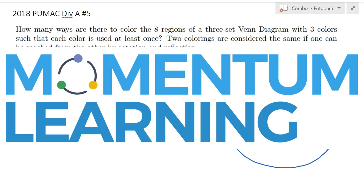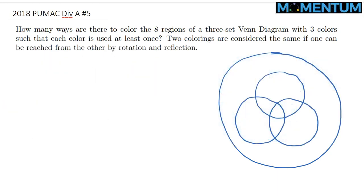Consider the following 2018 PUMAC problem. Here is a view of this problem. Like in this picture, we have a three-set Venn diagram, which splits our picture into eight regions.